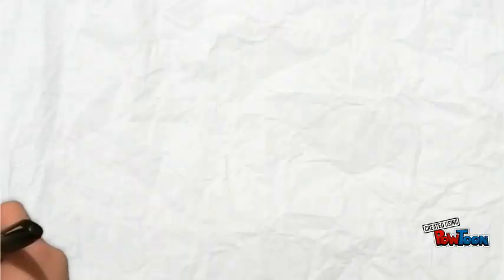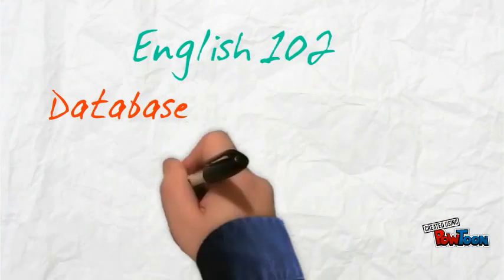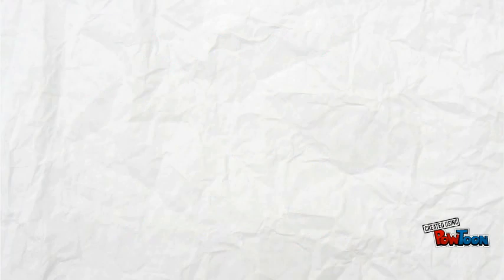Throughout English 102, you'll watch brief videos to help you develop the research vocabulary you need for success. In this video, we'll look at the difference between a database and a search engine, and we'll also look at how the Internet figures into this whole picture.